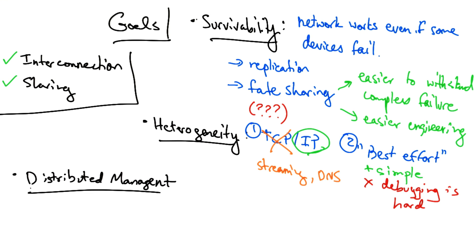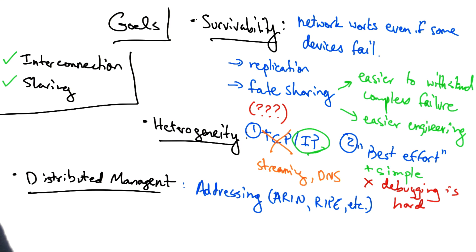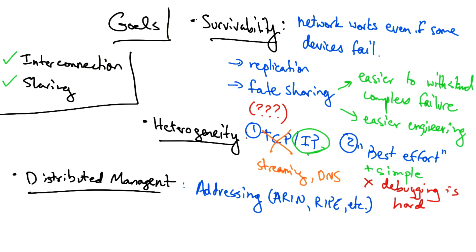Another goal of the internet was distributed management, and there are many examples where distributed management has played out. In addressing, we have routing registries. For example, in North America we have ARIN, or the American Registry for Internet Numbers. And in Europe, that same organization is called RIPE.